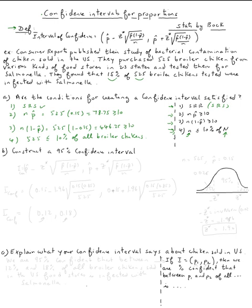All right, question b, construct a ninety-five percent confidence interval. Of course, first we want to write the formula. Interval of confidence is p hat minus z star square root p hat one minus p hat over n. And then the other extreme of the interval is p hat plus z star square root of p hat one minus p hat over n.